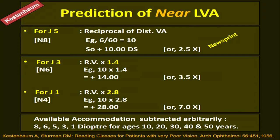For near low vision aids, Kestenbaum's rule states that to give the patient J5 vision, take the reciprocal of the distant visual acuity. For 6/60 vision, the reciprocal is 10, meaning a 10-diopter sphere or 2.5x magnification, which is sufficient to read newsprint. For J3 vision, multiply the reciprocal by 1.4. Remember to subtract available accommodation — approximately 8, 6, 5, 3, and 1 diopter for ages 10, 20, 30, 40, and 50 years respectively.